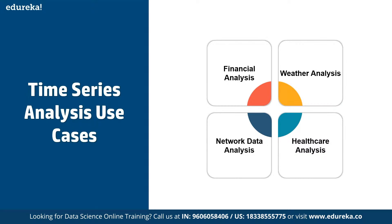Time series is a collection of data points collected at constant time intervals, analyzed to determine long-term trends and forecast the future. What makes it different from a regular regression problem? Two things: time series is time-dependent, so the basic regression assumption that observations are independent doesn't hold. Also, most time series have seasonality trends — variation specific to a particular time frame, like higher sales of woolen jackets in winter.